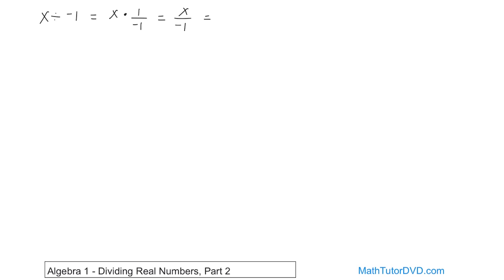And so what you end up getting is negative x. And that's the final answer. Because what you have here is in front of this, you have a 1 divided by the negative 1 giving you negative 1 here, and then the x comes along for the ride.